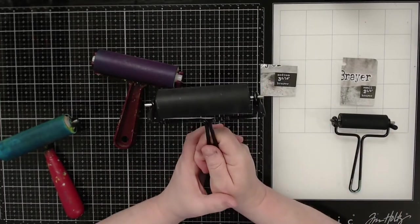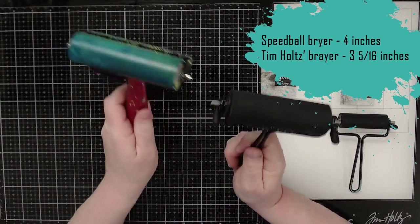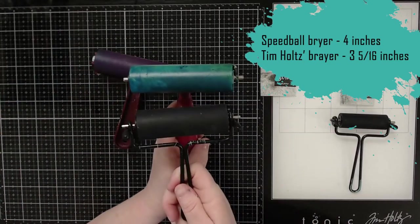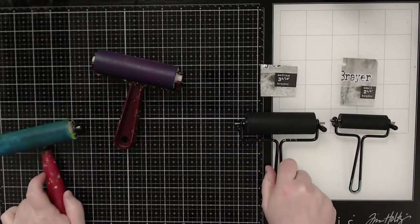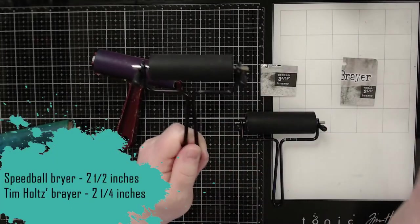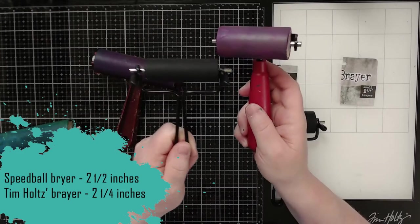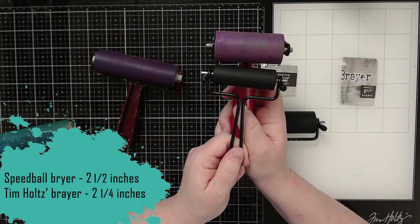This one here is three and five sixteenths of an inch, whereas these brayers are four. So as you can see, they're slightly smaller. And then this brayer here is two and a quarter, whereas this brayer is two and a half. And so again, just a quarter of an inch smaller.